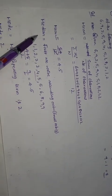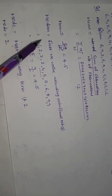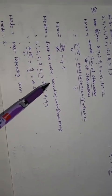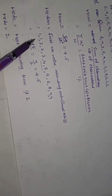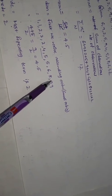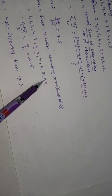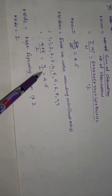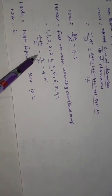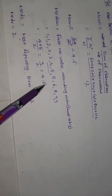Next, median. We arrange the data in ascending order — from small to big. The series has 12 values. Since there are two middle terms, we take those two middle terms. The middle two values are 8 and 5. So median equals (8 + 5) divided by 2, equal to 9 divided by 2, equal to 4.5.